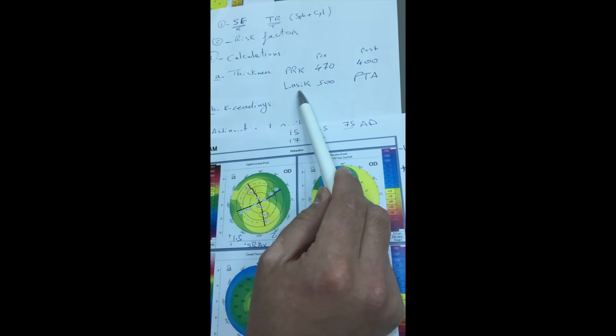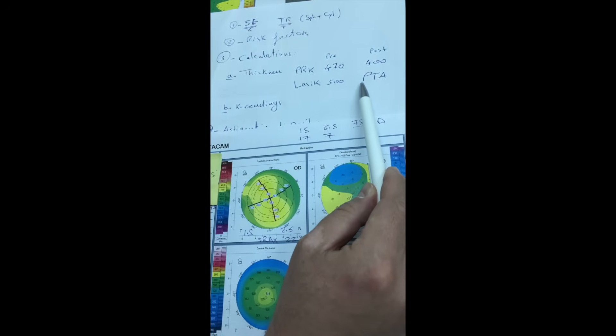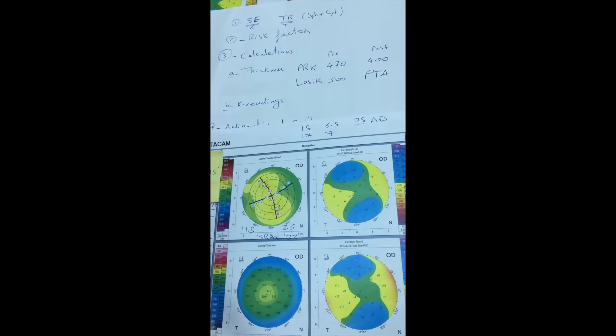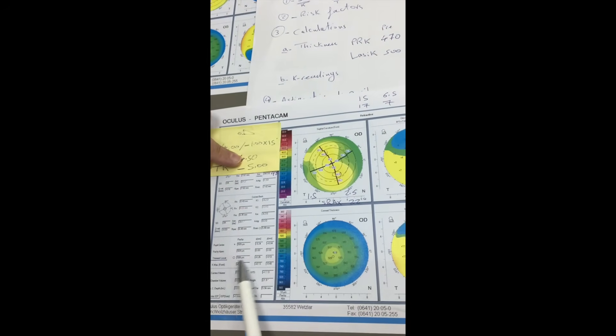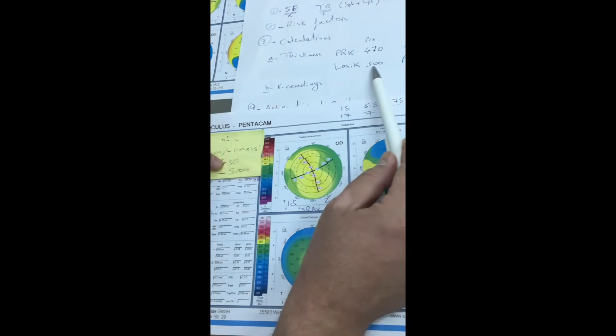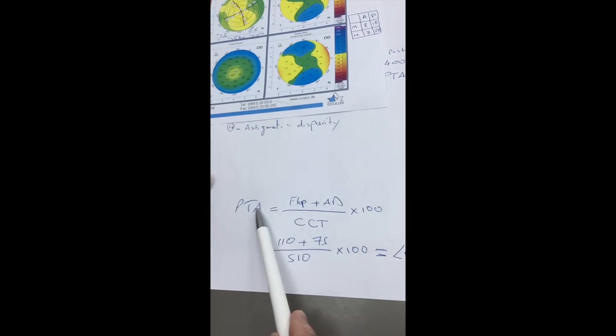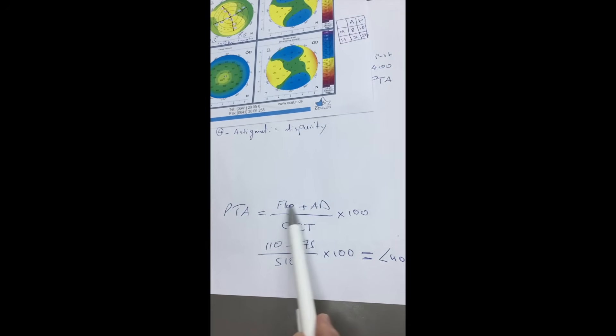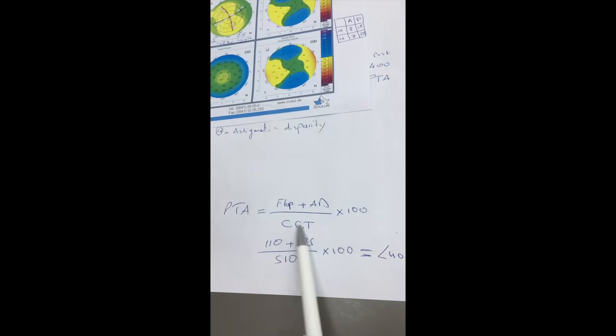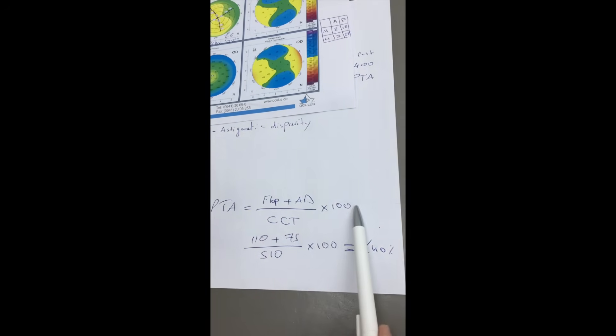And to do LASIK, we have to do the calculations regarding the PTA. The starting point is 500. So as you see here, it is almost 510. So the starting point is okay. But for the PTA, the PTA is the sum of flap thickness with the ablation depth divided by the central corneal thickness multiplied by 100.